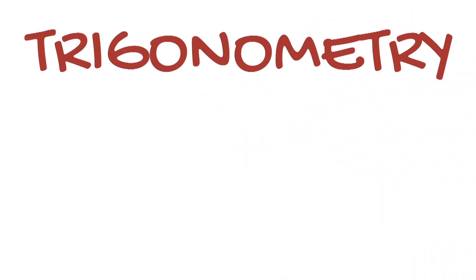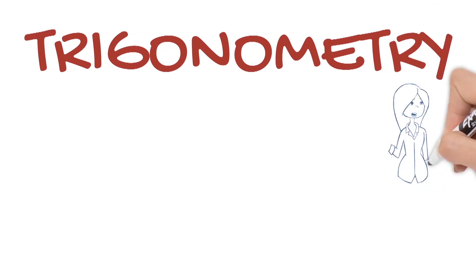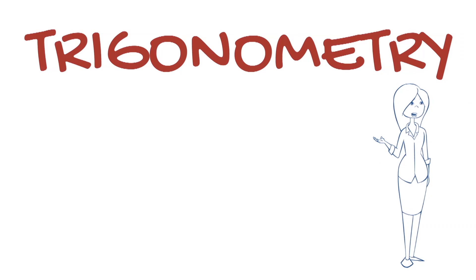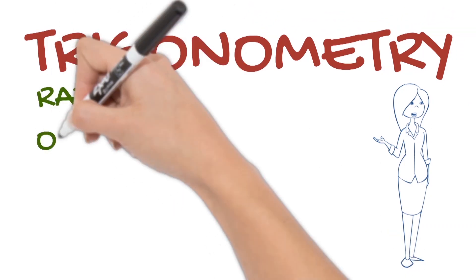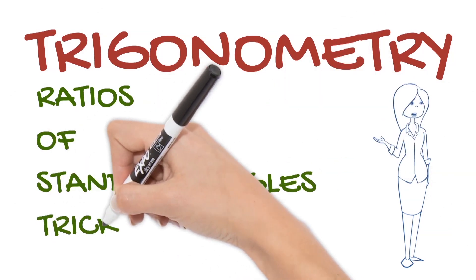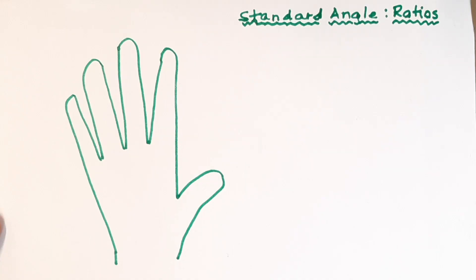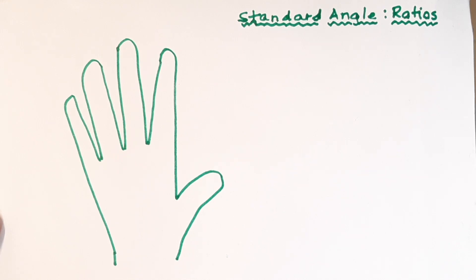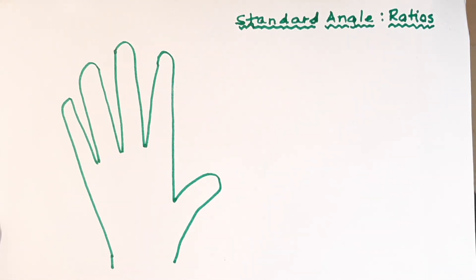Good morning, welcome to TMMS productions. Today we are going to learn how to get the ratios of standard angles. That is the trick number one — in order to find the ratios of standard angles, we will use a tool which we always have with us: that is our hand. So we are going to use the five fingers of a hand.